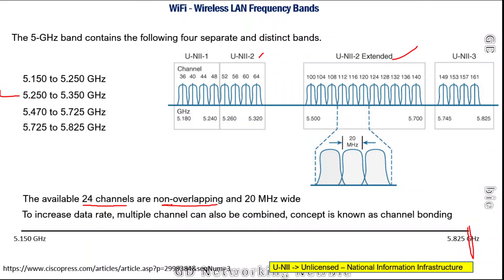To increase data rate, multiple channels can be combined — a concept known as channel bonding. For example, one channel is 20 megahertz wide, and by combining two channels we get 20 plus 20, giving a 40 megahertz wide channel for transmission and reception.